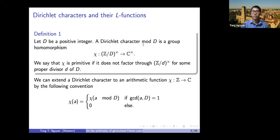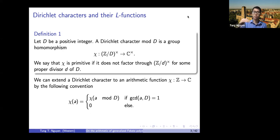Let me recall some basic definitions from number theory. A Dirichlet character is simply a group homomorphism from the unit group of Z mod d to C cross, where d is called the modulus or conductor. We say chi is primitive if it doesn't factor through some smaller quotient Z mod d' for d' a divisor of d. We extend Dirichlet characters to arithmetic functions from Z to C: if a and d are relatively prime, chi(a) equals chi(a mod d), and if not relatively prime, chi(a) equals zero.